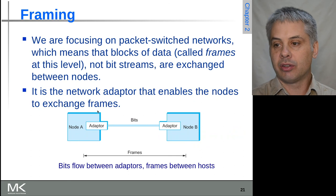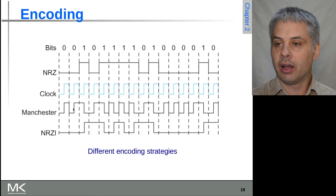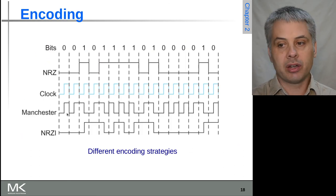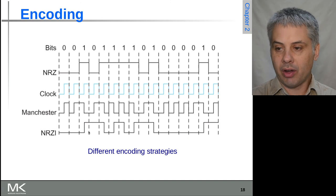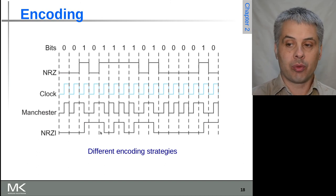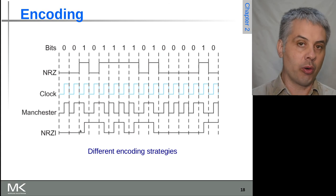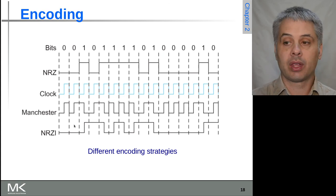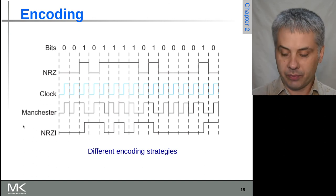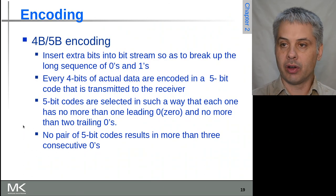And compared to - so Manchester needed double the bandwidth, NRZI with 4B/5B encoding only requires 5 over 4, 1.2 times the data rate for that frequency, and gets us some of these nice things.